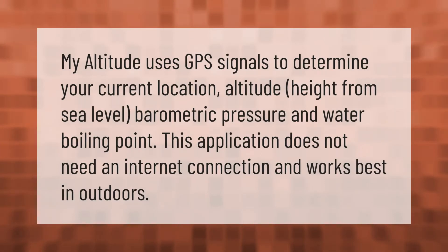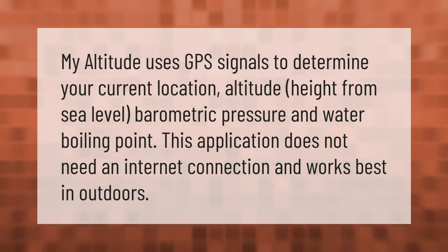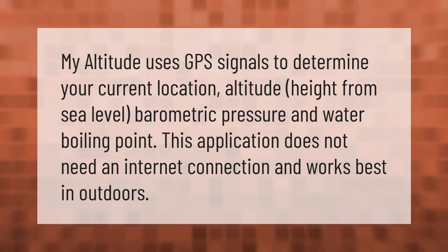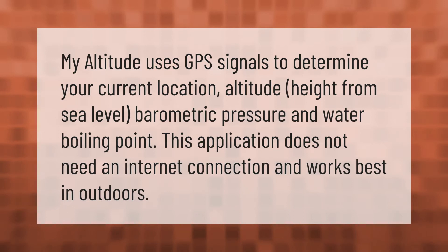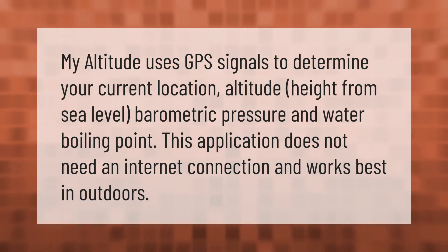My Altitude uses GPS signals to determine your current location, altitude (height from sea level), barometric pressure, and water boiling point. This application does not need an internet connection and works best outdoors.